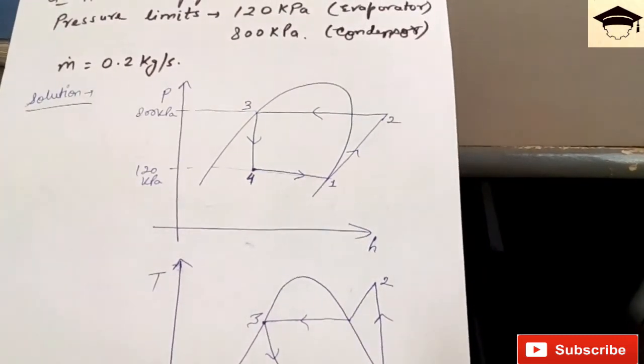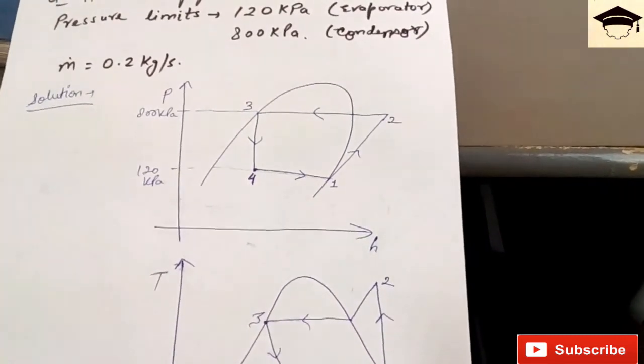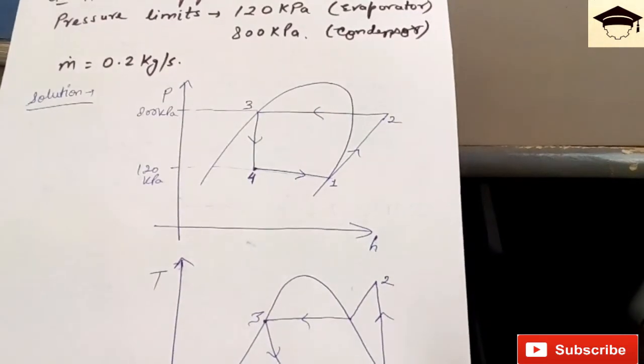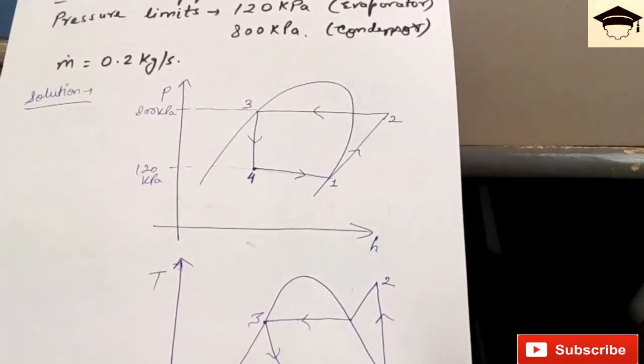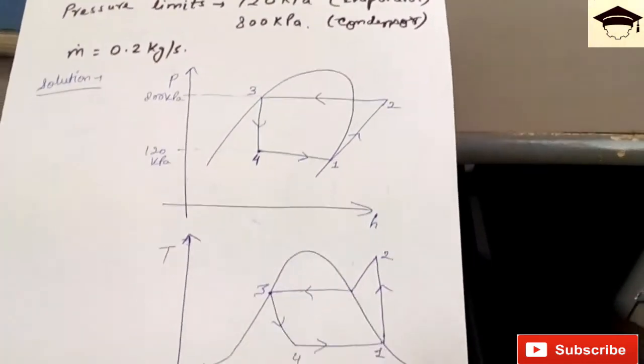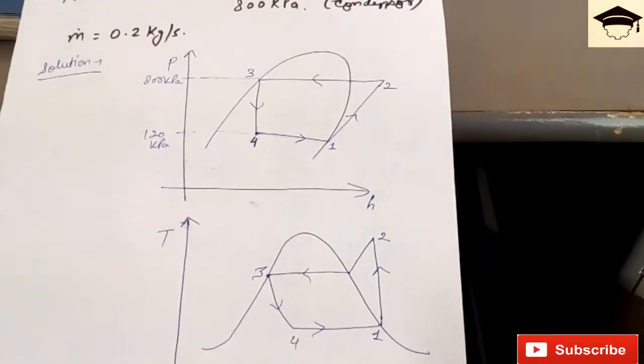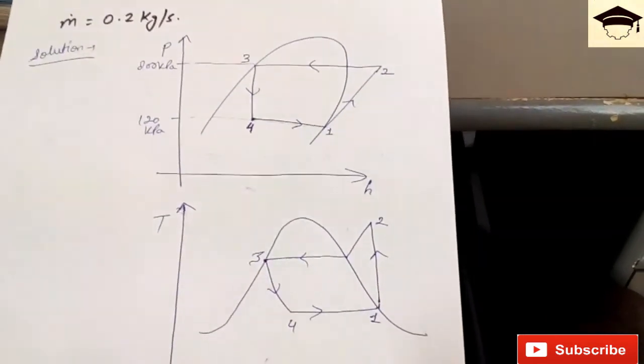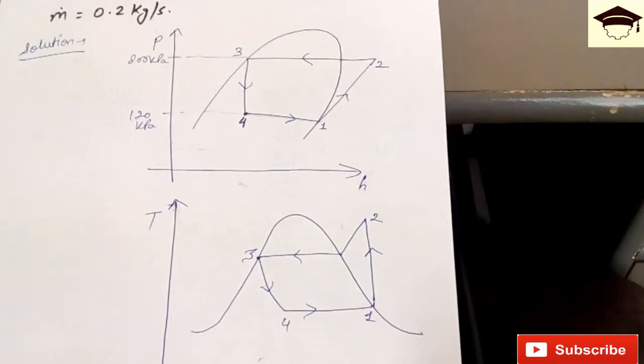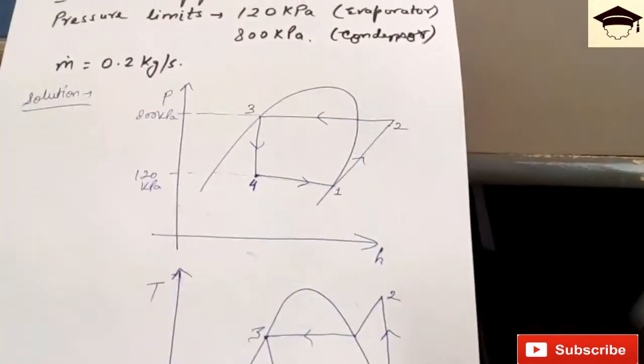Now from the pH chart I have taken the values corresponding to these pressures. h1 is equal to 237 kilojoules per kg, and h3 is equal to h4 is equal to 95.5 kilojoules per kg. h2 is equal to 276.45 kilojoules per kg.